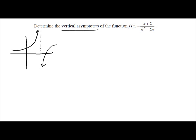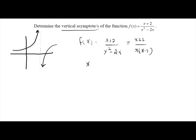For the function f(x) = (x + 2) / (x² − 2x), if the denominator x² − 2x equals zero, then this function will not be defined. Simplifying, the numerator is (x + 2) and the denominator factors as x(x − 2). This function will not be defined when x = 0 and when x = 2.